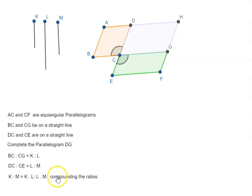So the ratio still remains the same. So K is to M equal to K times L is to L times M. We know BC is to CG as AC is to CH.